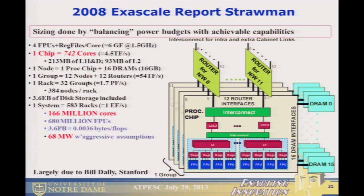The Exascale straw man came about when we realized we were running out of power and had to give up cache coherency entirely — if you need coherency, you do it in software. What we ended up with was a chip with 742 cores, each with four floating-point units. Twelve of these went on a board, boards went in racks, and to get to a peak exaflop you'd need just under 600 racks, with 166 million cores and about 680 million floating-point units. That means every single machine cycle you need a billion floating-point operations to be 100% efficient.